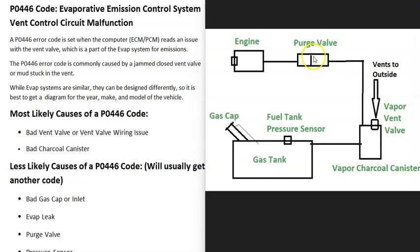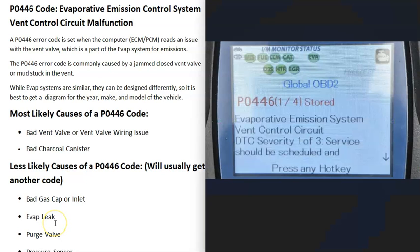The charcoal canister also has a hose going up to the engine to what's called a purge valve. The purge valve stays closed when the engine is off, and once the engine is running and warmed up, the computer tells it to open, allowing gas vapors to go into the engine and get burned off. That's a basic overview of the EVAP system. Be sure to get a diagram for your specific vehicle, and let's look at possible causes of a P0446 code.